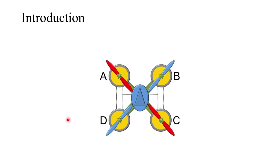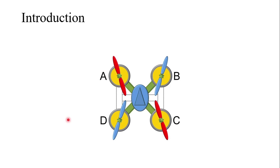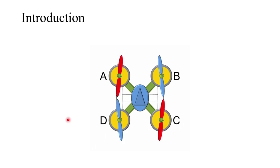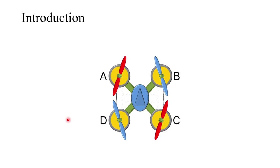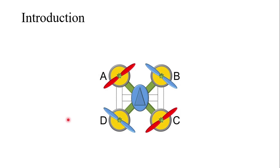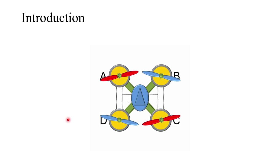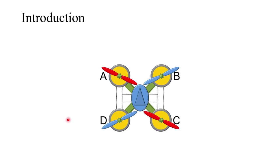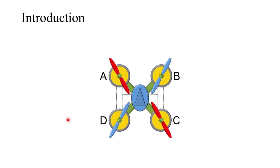That reaction torque will cause the helicopter to rotate in the opposite direction. If you observe a helicopter, there is a tail rotor whose purpose is to cancel the resultant torque produced by the rotation of the main propeller. Since we use four propellers, we have the option to rotate two propellers in one direction and the other two in the opposite direction, so the resultant torques cancel each other. We rotate the diagonally opposite rotors in one direction and the other pair in the opposite direction.